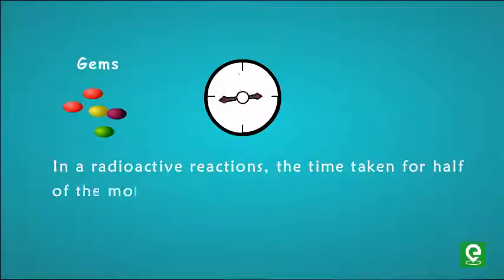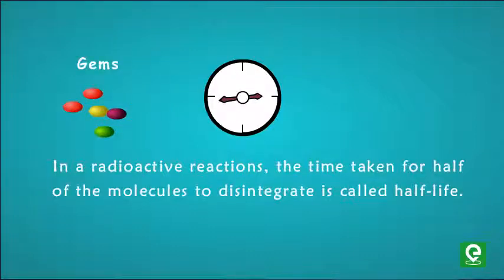In radioactive reactions, the time taken for half of the molecules to disintegrate is called half-life. In the radioactive equation, if we substitute N with N₀ by 2, we get t half is 0.693 by lambda. Remember this formula.